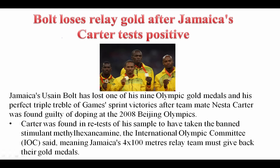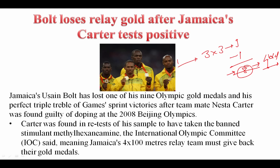Bolt loses relay gold after Jamaican Carter tests positive. Previously Usain Bolt had triple three medals in three Olympics, but because of the positive doping test of his teammate Nesta Carter, they had to give back one of their medals. Bolt now has eight Olympic gold medals instead of nine. The IOC ruled that the Jamaican 4x100 meter relay team must give back their gold medals won at the 2008 Beijing Olympics. Nesta Carter was found guilty of doping at the 2008 Beijing Olympics.